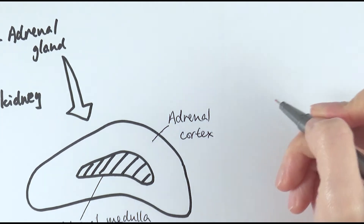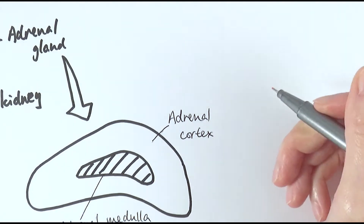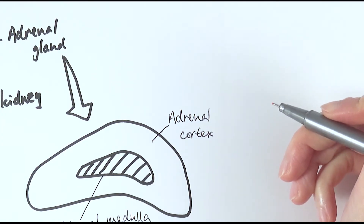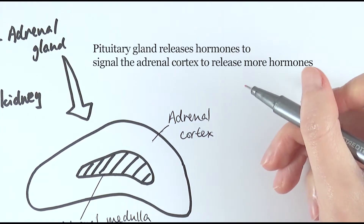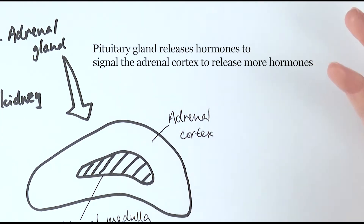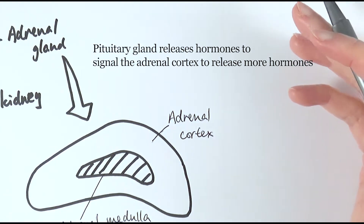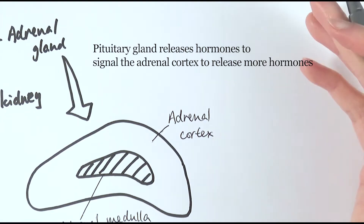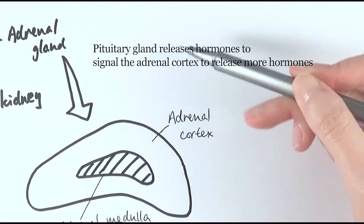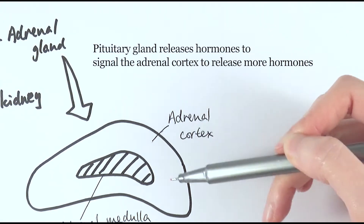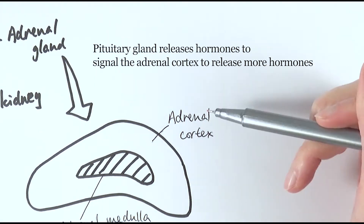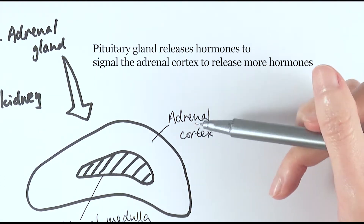The adrenal cortex is mainly controlled by hormones sent from the pituitary gland. The pituitary gland is an example of an endocrine gland — it's almost like the master gland because it is able to produce many different types of hormones on its own, and also produce hormones to have a secondary effect on other endocrine glands, telling them to make more hormones. The adrenal cortex is one of them.